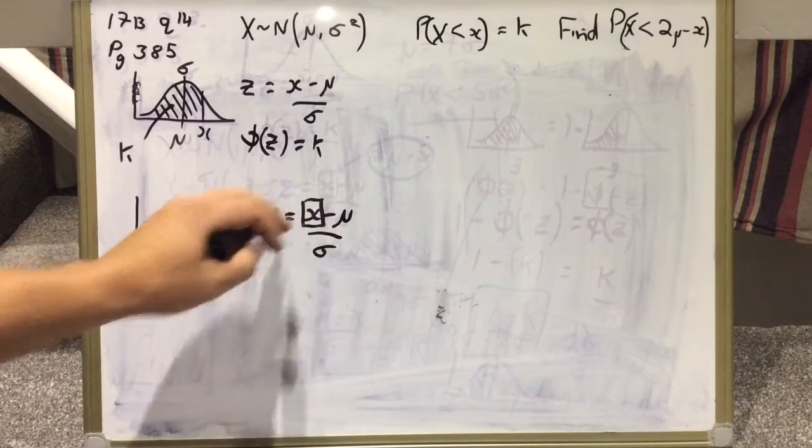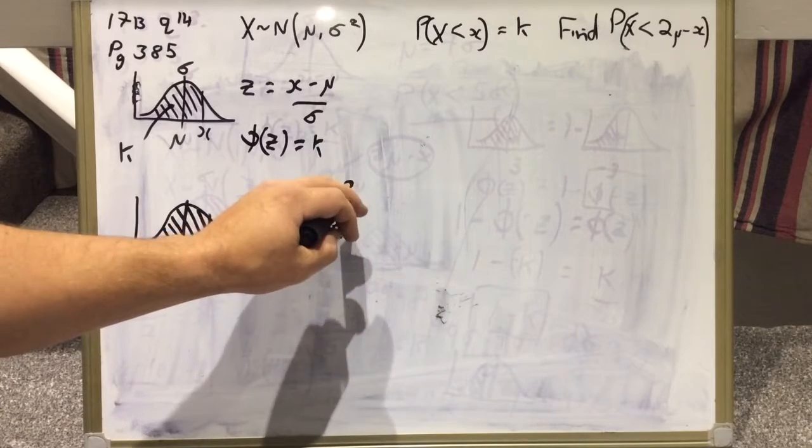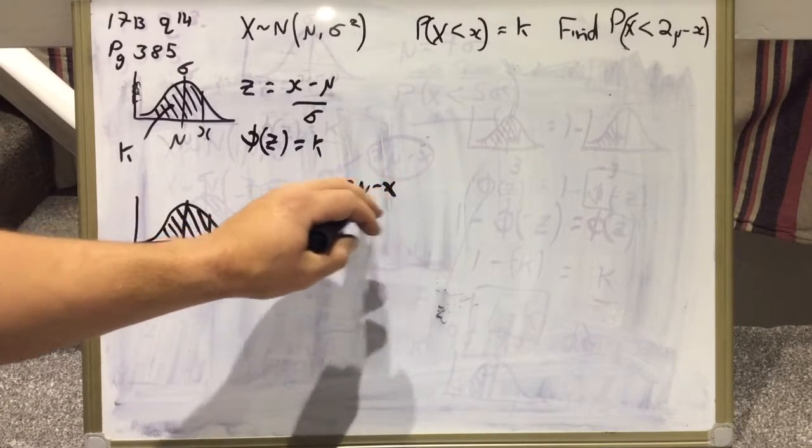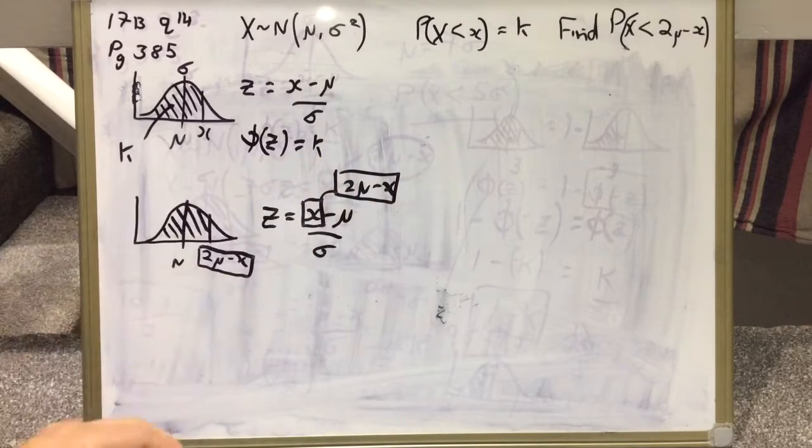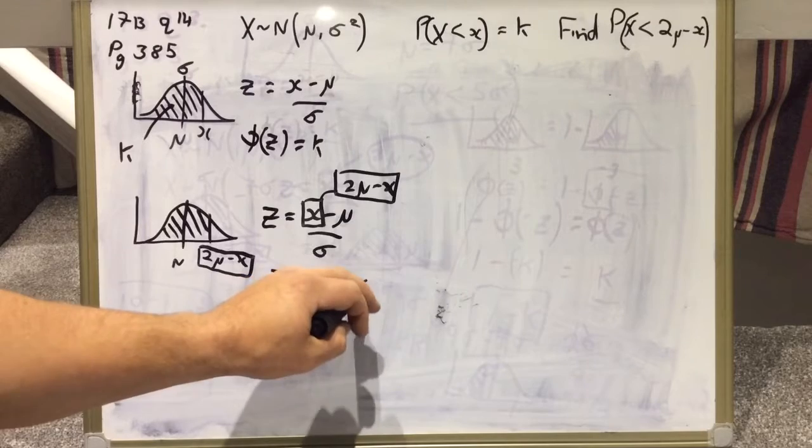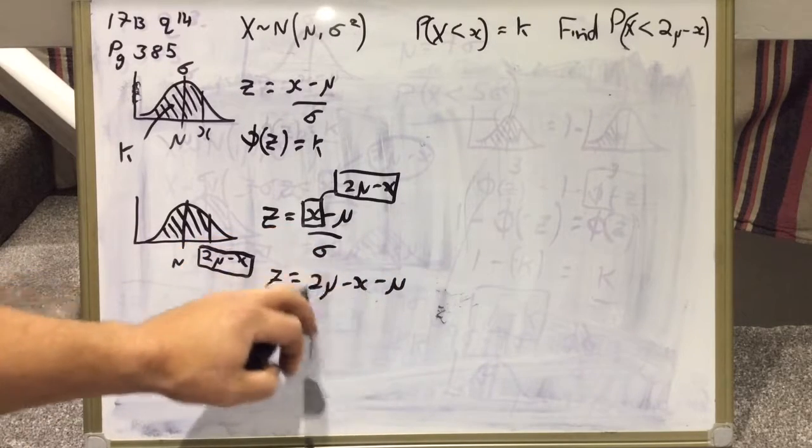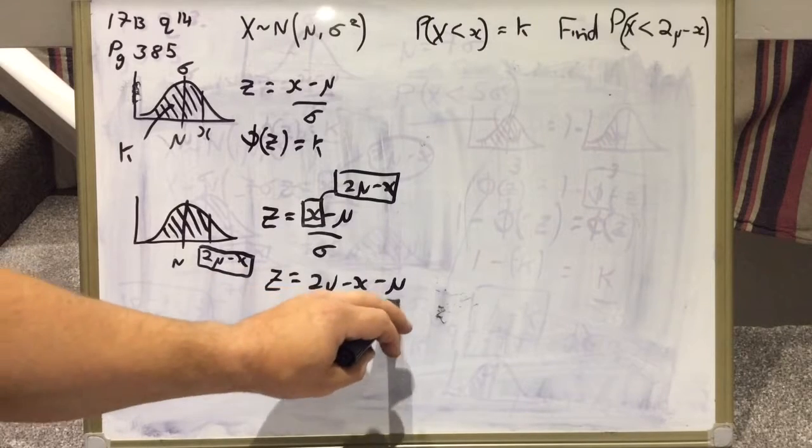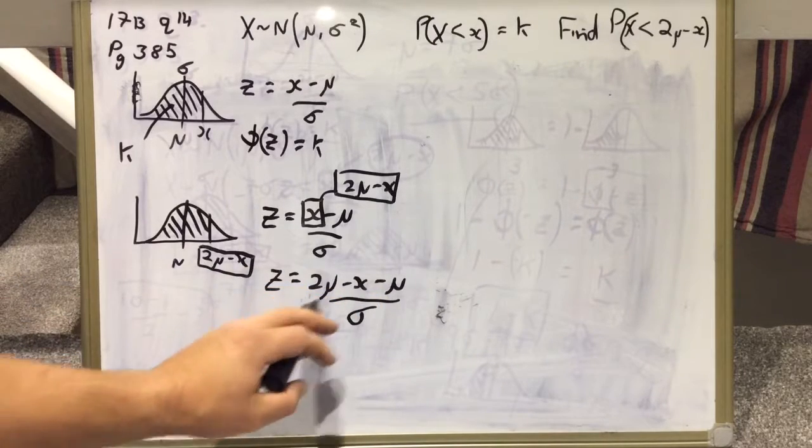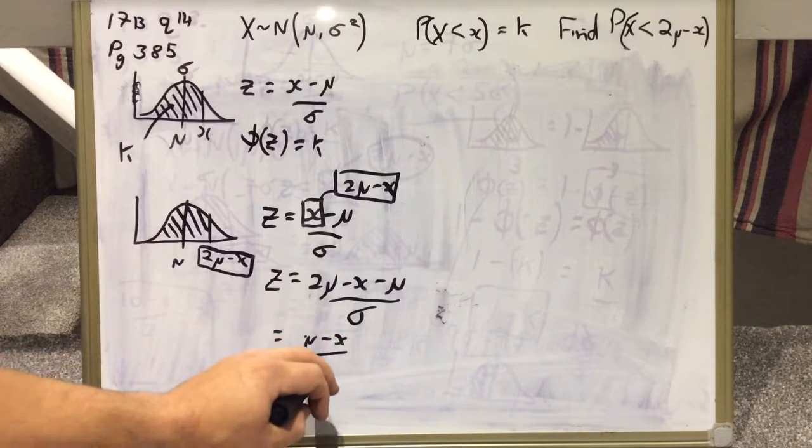We're going to plug into Z equals X take mu on sigma. This value of X is not that little X there. All of that is replaced with 2 mu take X as a substitution. Z is equal to 2 mu take X, pop back the take mu, treating all of that as X take mu on sigma. Simplifying that gives me 2 mu take mu, which is just mu take X on sigma.